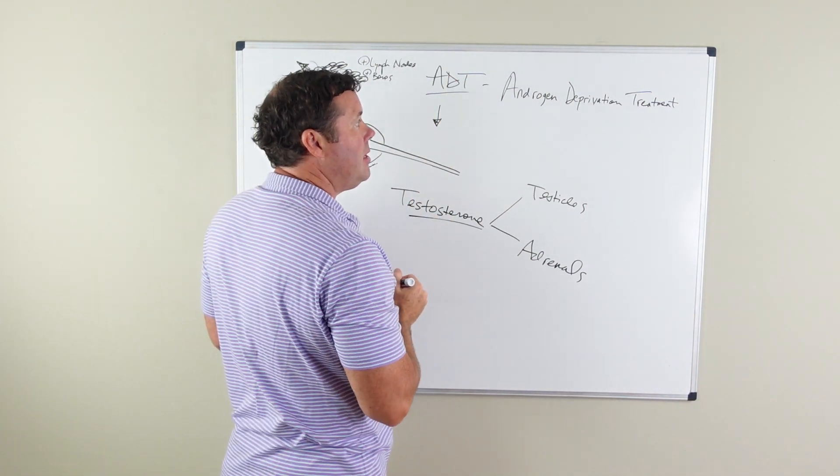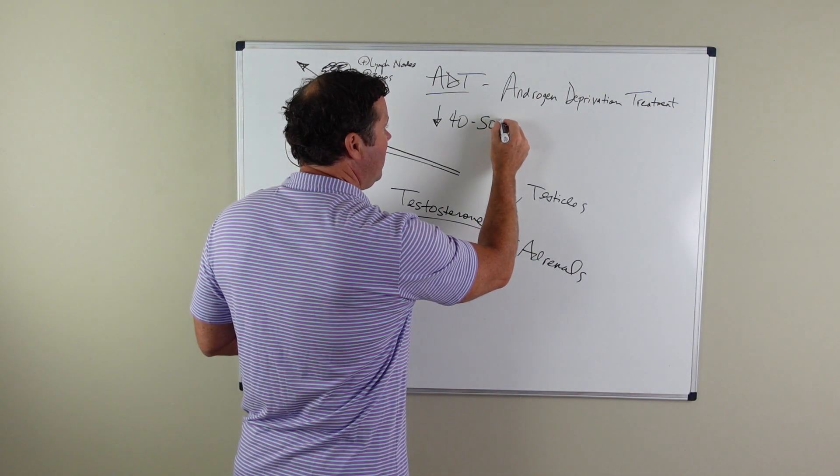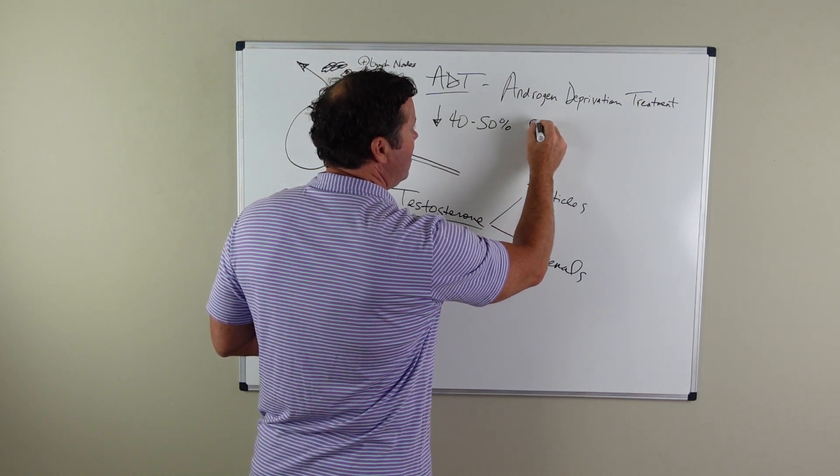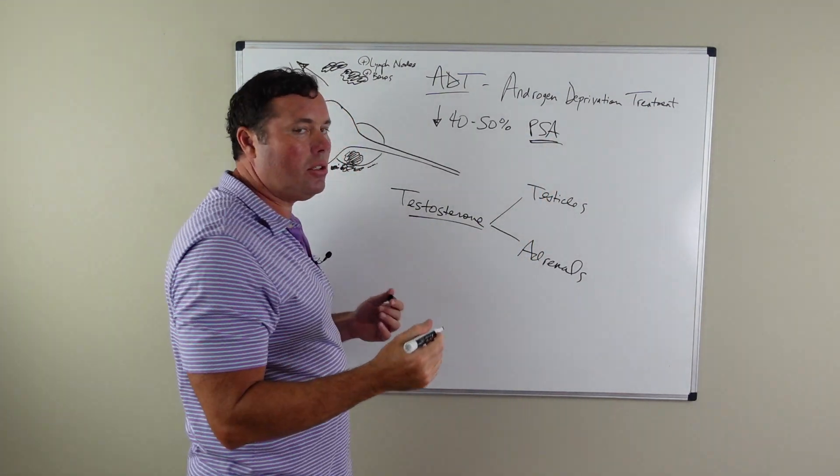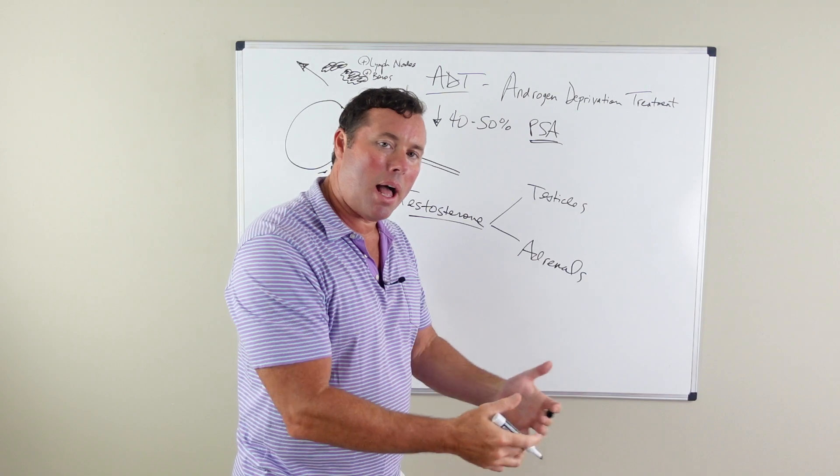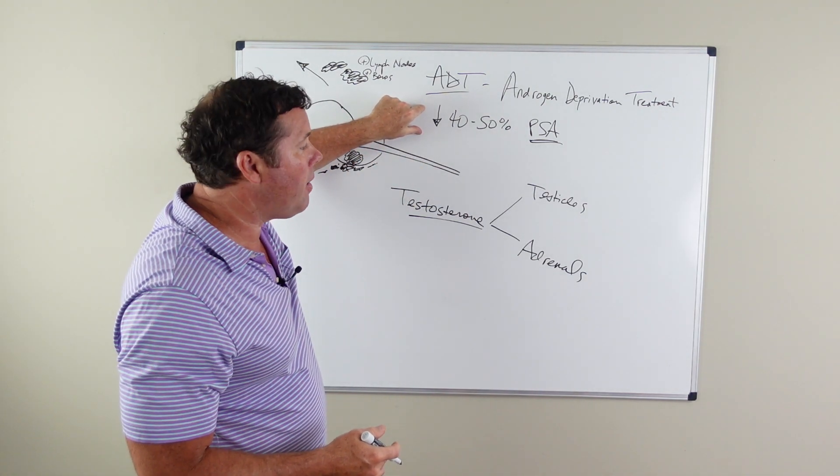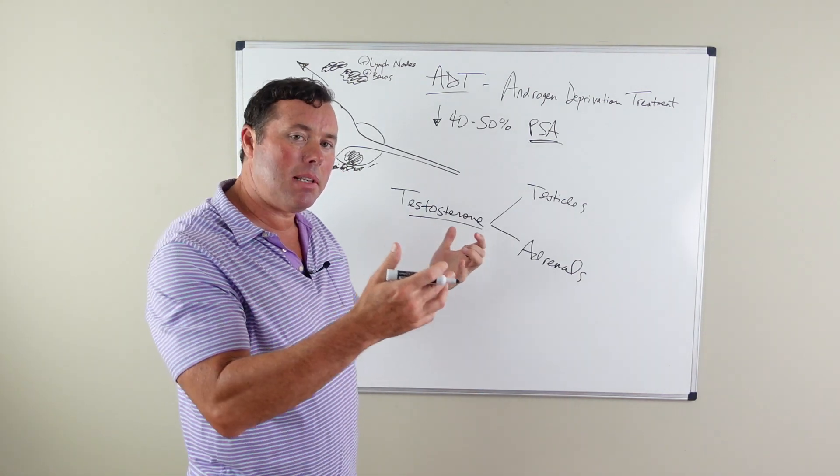Just simply being put on this ADT, you should see anywhere from a 40 to 50 percent decrease in your PSA. That's a good sign that tells you that your cancer is likely responding to this low testosterone environment.